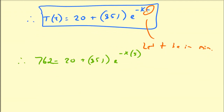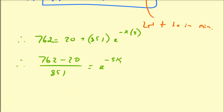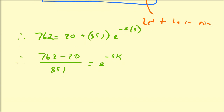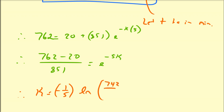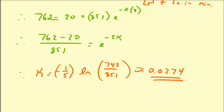Moving things around, we're going to have 762 minus 20 all over 851 equals e to the minus 5K. Then we take the natural log of both sides, divide both sides by negative five, and that gives us K. So K is equal to negative one-fifth times the natural log of 742 all divided by 851, and that's approximately equal to 0.0274. That's our temperature constant K for this particular metal object.